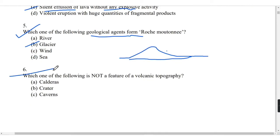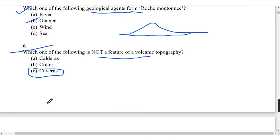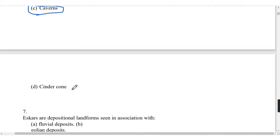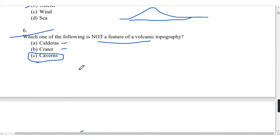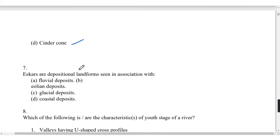Which one of the following is not a feature of volcanic topography? Caverns are formed by groundwater, not in volcanic activity. The caldera and crater we have seen in 2018 question paper. Cinder cones are features of volcanic topography.